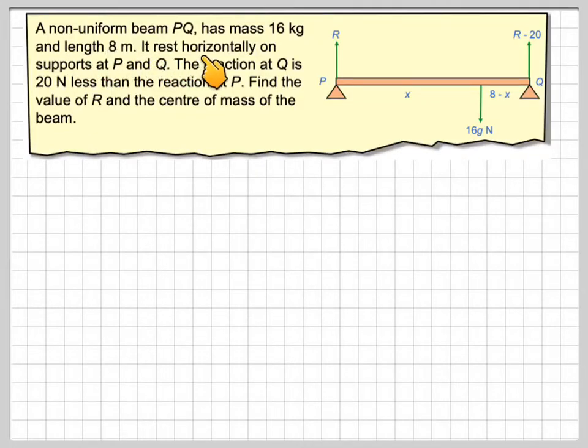A non-uniform beam PQ has a mass of 16 kg and a length of 8 m. It rests horizontally on supports at P and Q. The reaction at Q is 20 N less than the reaction at P. Find the value of R and the center of mass of the beam.